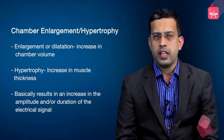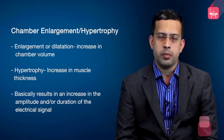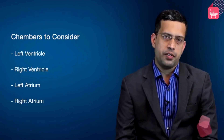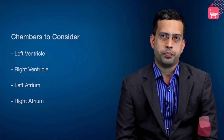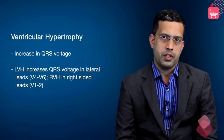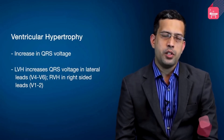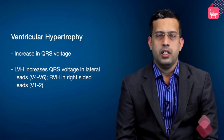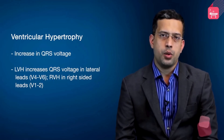We have four chambers to consider: the left ventricle and the right ventricle, and the two atria. Let's take up ventricular hypertrophy first. An increase in the amplitude and duration of the signal pertaining to the chamber means the first thing which comes to mind is an increase in QRS voltage.